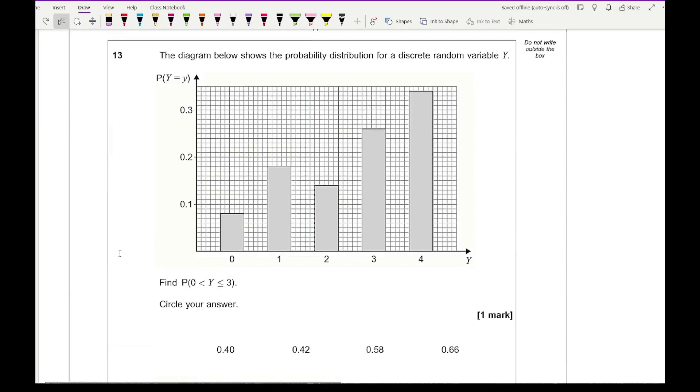Moving on to question 13, it says the diagram below shows the probability distribution for a discrete random variable Y. It says find the probability that Y is between 0 and inclusive of 3. For this, what we need to do is basically include the numbers from 1, 2 and 3. So if we look at the probabilities of each of those, this one for 1 is 0.18, the one for 2 is 0.14, and the probability of 3 is 0.26. All we need to do is add those numbers up: 0.18 plus 0.14 plus 0.26, which gives us 0.58.